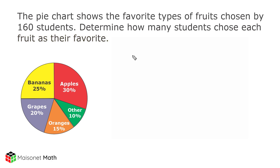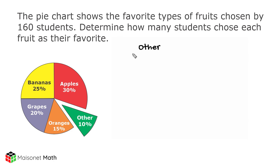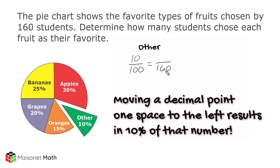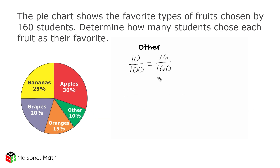All right, what we're going to do first is determine how many students chose some other fruit as their favorite. The pie chart says that 10% — or 10 out of every 100 students — chose some other category as their favorite, and we have to figure out how much that is out of 160. Whenever dealing with 10%, that just means you're taking the total and making it 10 times smaller. So all we have to do is take this total and move the decimal one space to the left, which gives us 16 students.